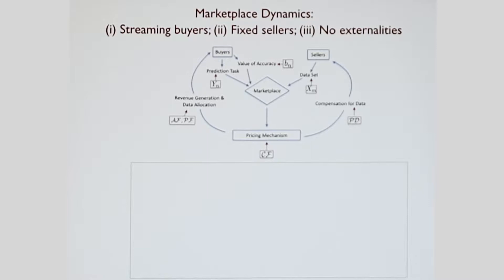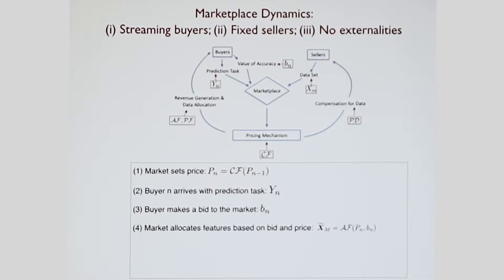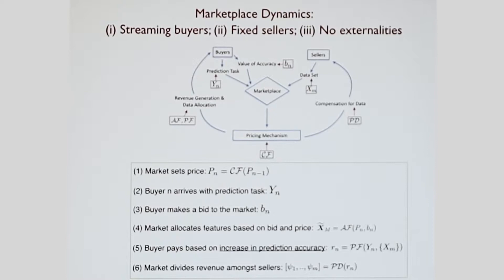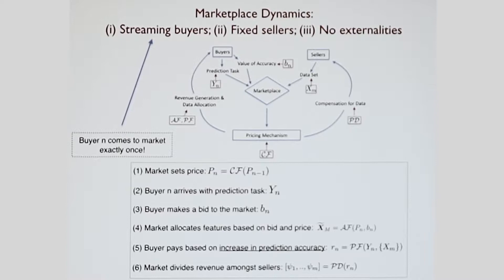This is the dynamics of the marketplace that we're going to study, which is when the buyers come one at a time, streaming buyers. The sellers are fixed and there are no externalities. What happens is first a market sets the price PN. The buyer N comes with some prediction task. The buyer decides to make a bid into the market based on the price that's currently set. Based on the bid, they get allocated some trading data, some features. Then the buyer pays based on the increase in accuracy that they receive. Lastly, the market based on, say, $100 worth of revenue was generated, is going to divide this revenue amongst the various sellers. What's important to note is that buyer N comes to the market exactly once and once they come, they leave forever.